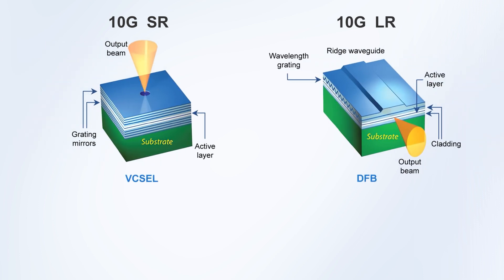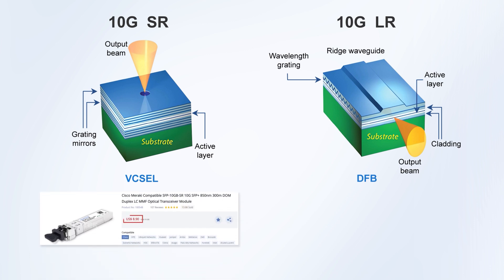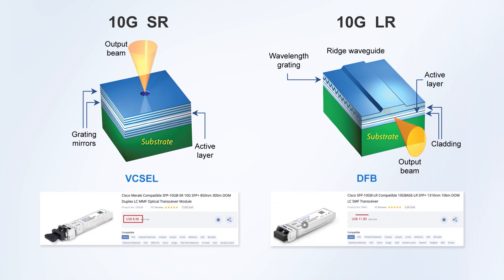Another difference is the type of laser they use. The 10G-SR uses a VCSEL laser, which is low-cost and energy-efficient, making SR the more affordable option. Right now, on the QSP Tech website, it's priced at $8.90, while the 10G-LR costs $11.90 — that's $3 more. The reason is that LR uses a DFB laser, which is more complex and expensive, but it ensures high-quality signal transmission over long distances in single-mode fiber.